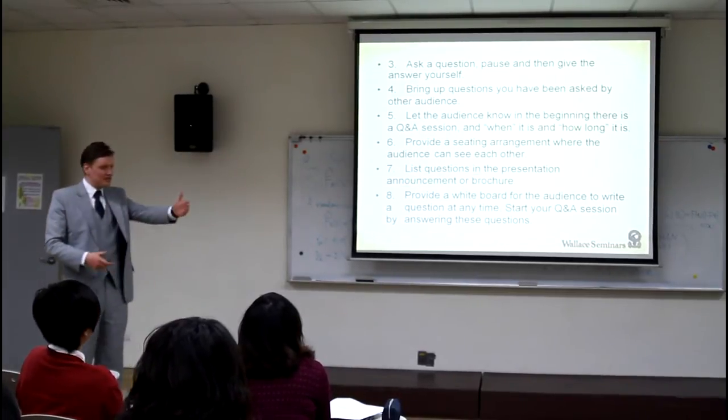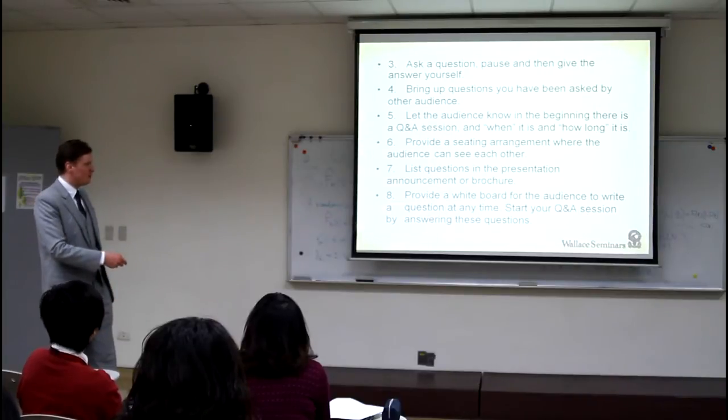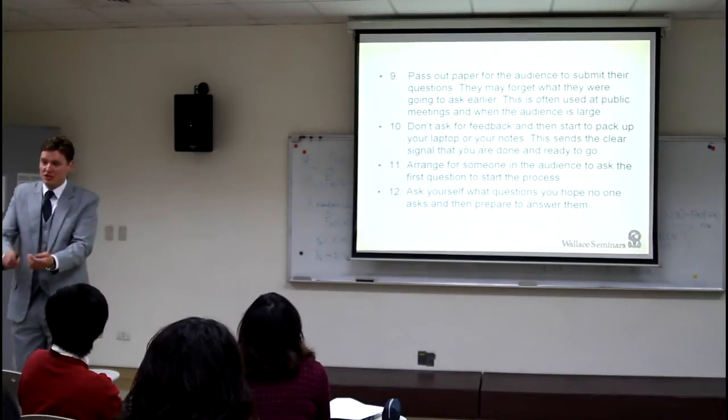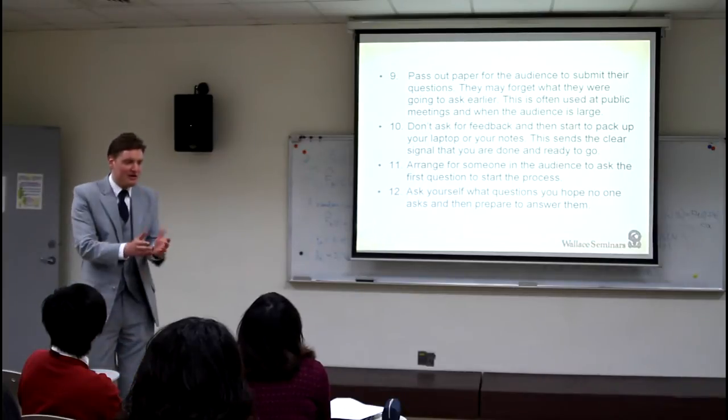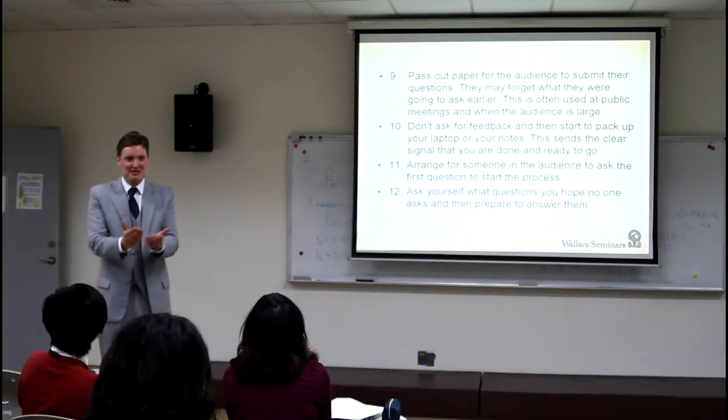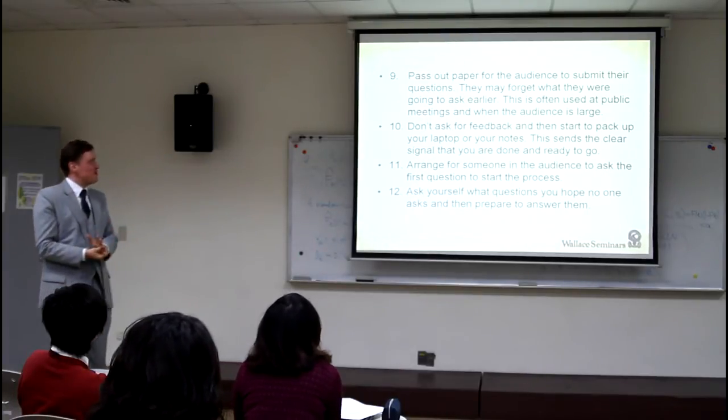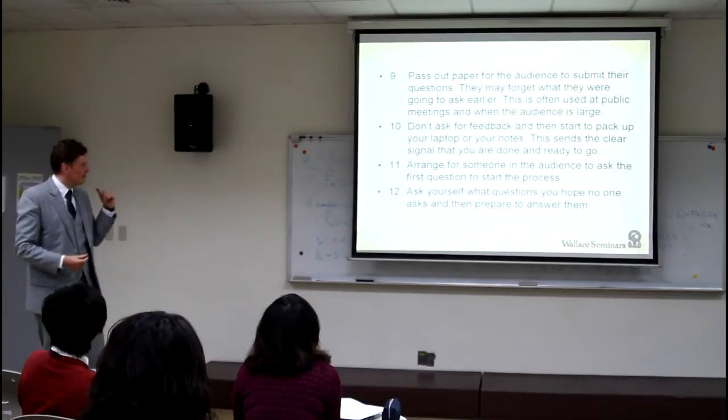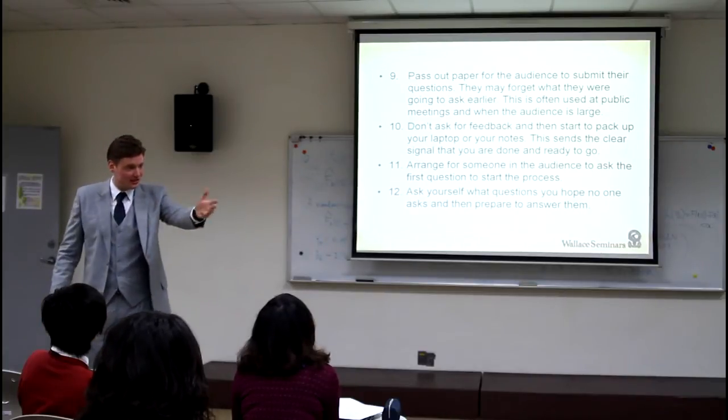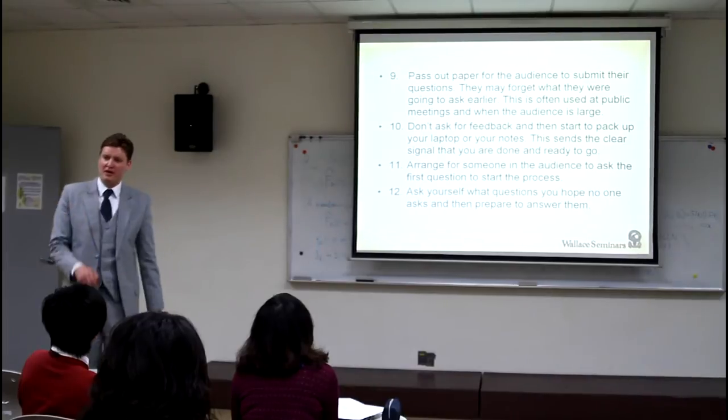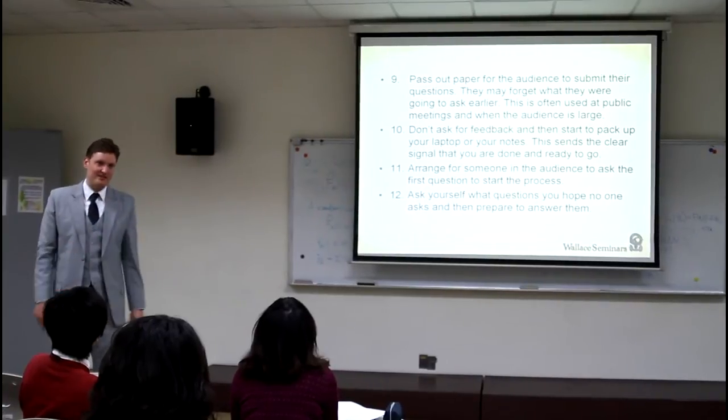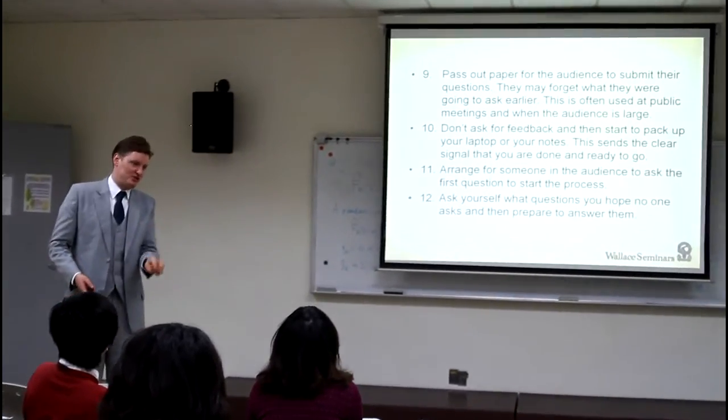You can list questions in the presentation announcement or brochure. You can provide a whiteboard for people to write down. You can pass out paper for people to write down their question and then give it to you. That's a good way because then if you get a really angry, nasty question, you can just read a different question. No one knows. You're going to survive. Don't ask for feedback and then start to run away. You know, look like you want them. Or you can ask for someone to arrange to ask the first question during the Q&A session, like your friend. Here's maybe the best one. Think to yourself what question you hope nobody will ask you and prepare for that question. And then you're more confident about all of them because you know the worst. You're ready for the worst.